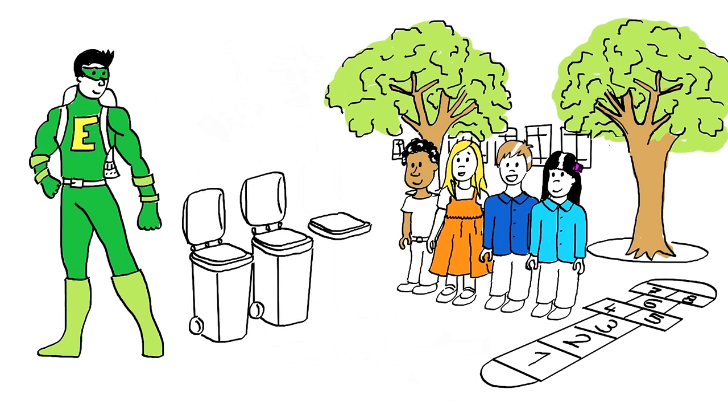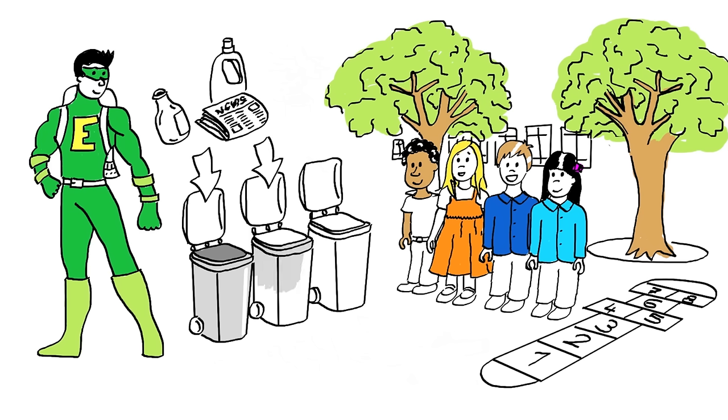Luckily, we have a system to do this. Different waste goes into different bins: one for glass, one for plastic, one for cardboard and newspapers, and one for everything else.